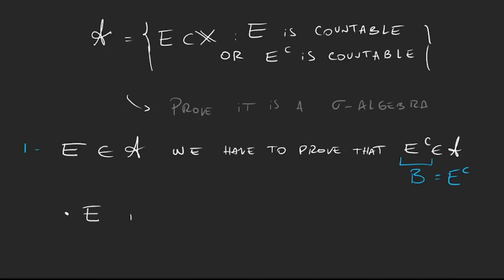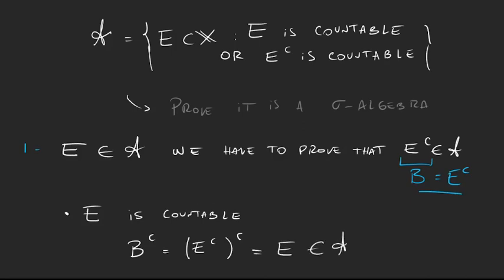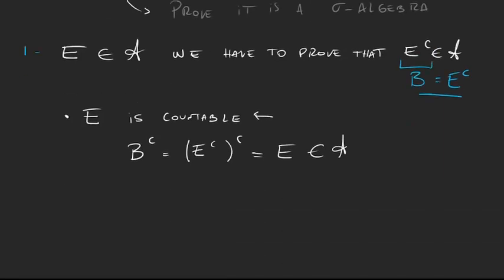The first case is if E is countable. Let's think about B. B complement is just E complement complement, which equals E, and E is in A. So B complement equals E, and E is countable. So then B falls into the category where its complement is countable, which means B is in our collection A.